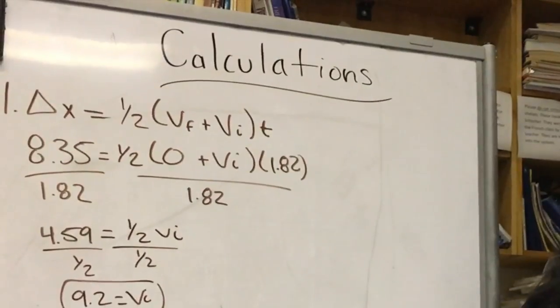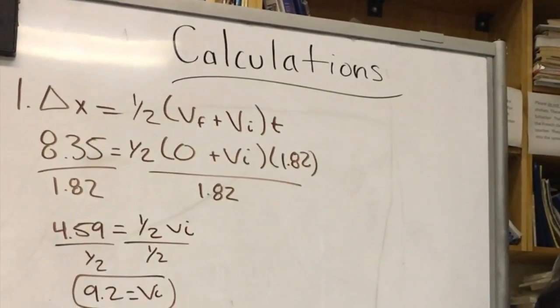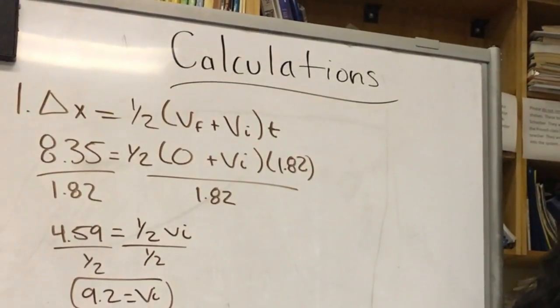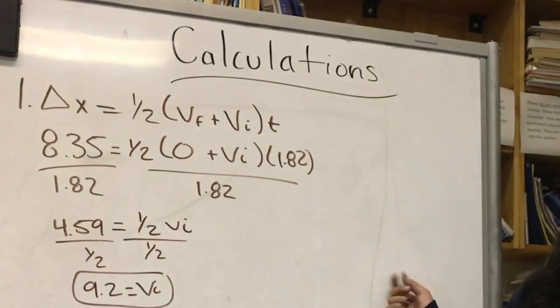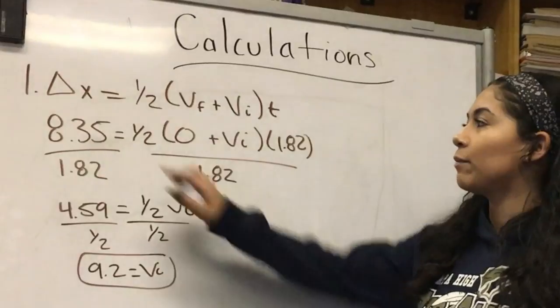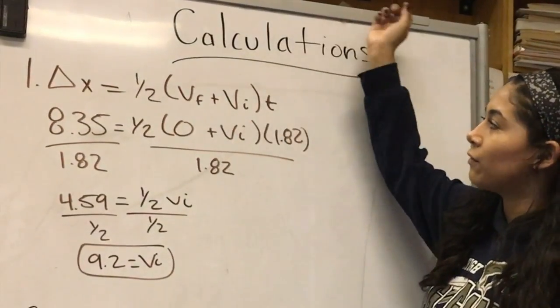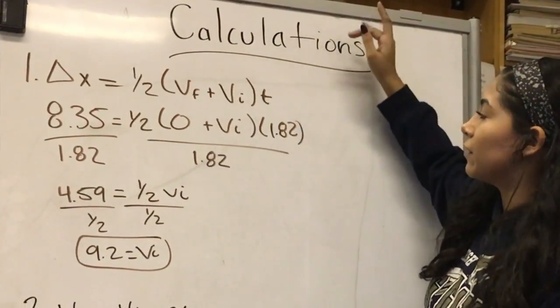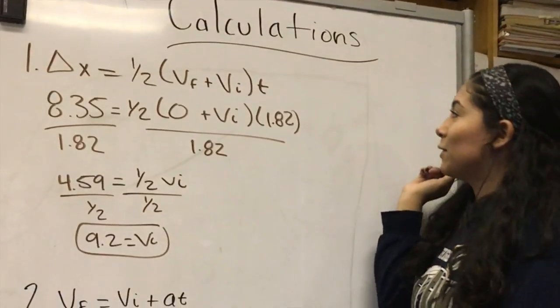From the data table shown before, I am using the average numbers to solve for the initial velocity and the acceleration. First, I plugged in for delta x 8.35 and for final velocity 0 and for initial, well it's unknown.